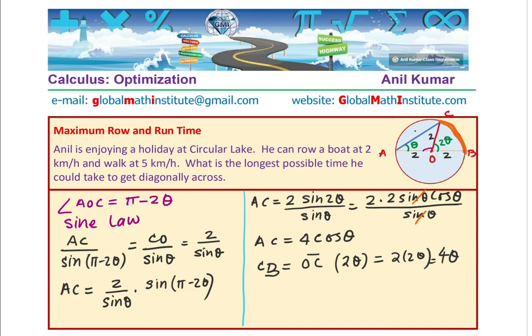So now, once we know that, the time taken is distance divided by speed. Time taken will be distance AC with velocity of rowing, plus CB, the arc, with the walking speed. AC is 4 cos theta divided by rowing speed of 2 kilometers per hour plus walking speed of 5. So it's 4 theta over 5. So we now get an expression for time. Now it's very simple. You can find the derivative of this and maximize the time.